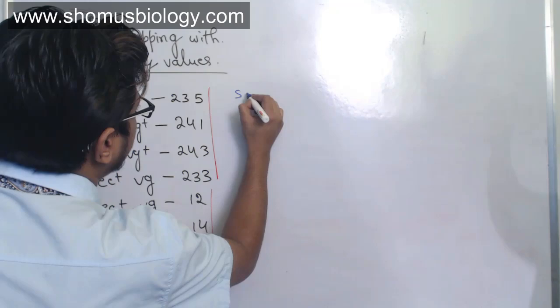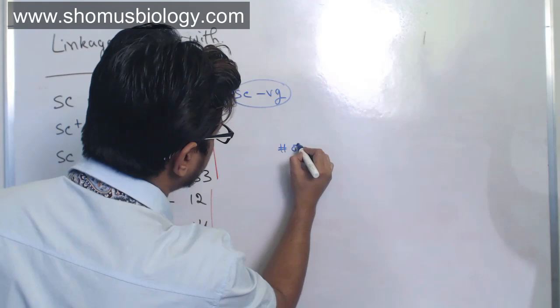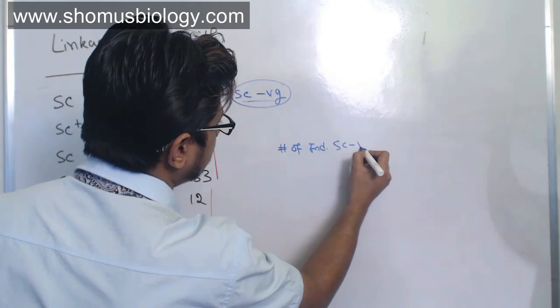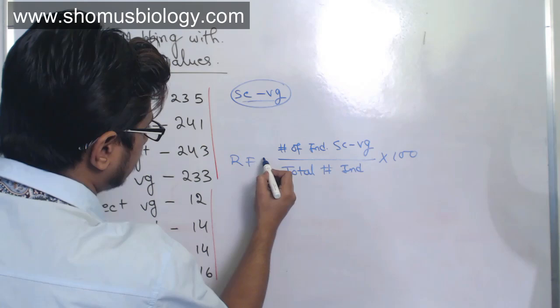To calculate the recombination frequency between SC and VG, we need to know the number of individuals formed by recombination between SC and VG, divided by the total number of individuals, multiplied by 100. That is our calculation for recombination frequency.